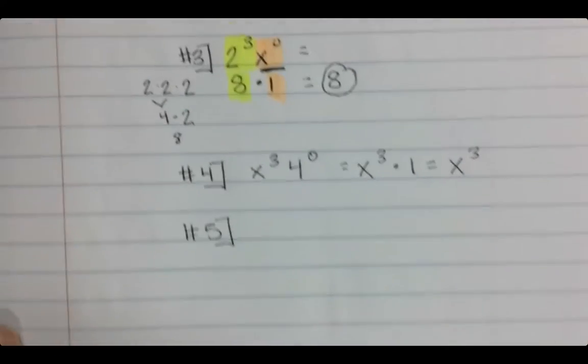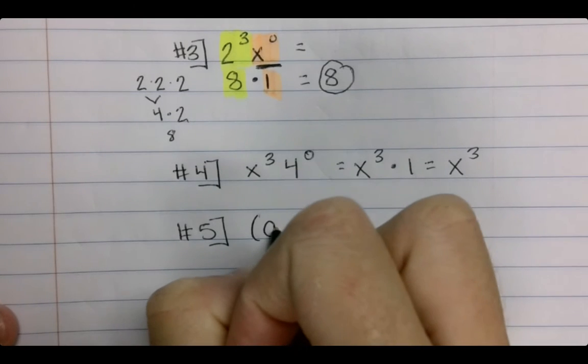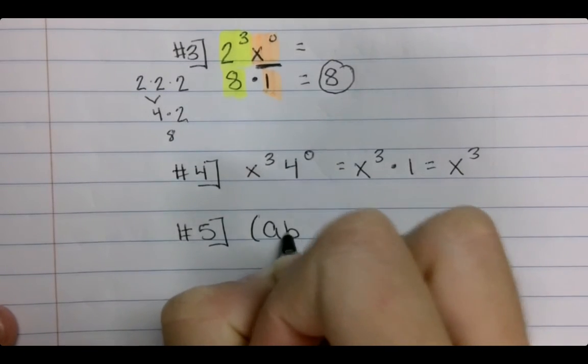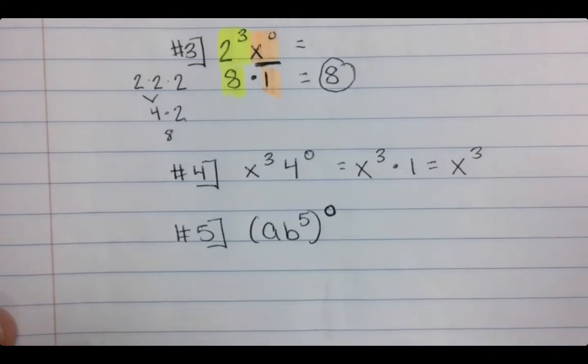So we are going to finish up with that fifth example. So a fifth example is going to be a, b to the fifth, all raised to the zero power.